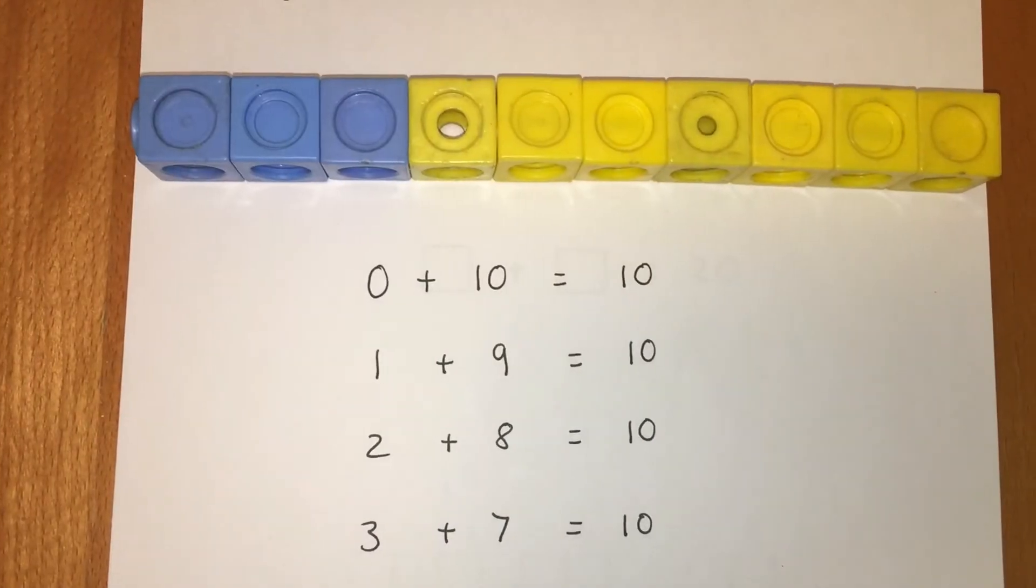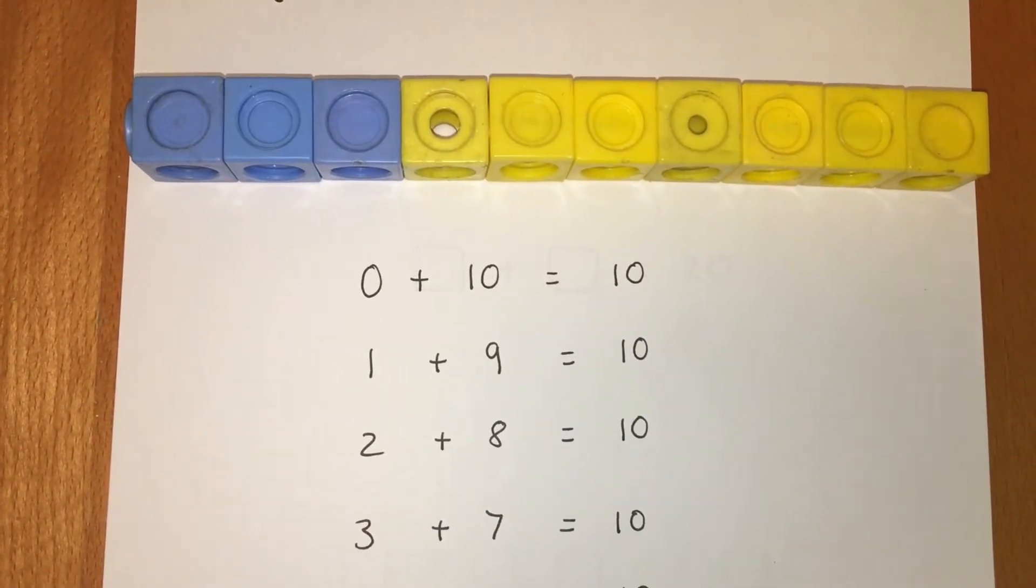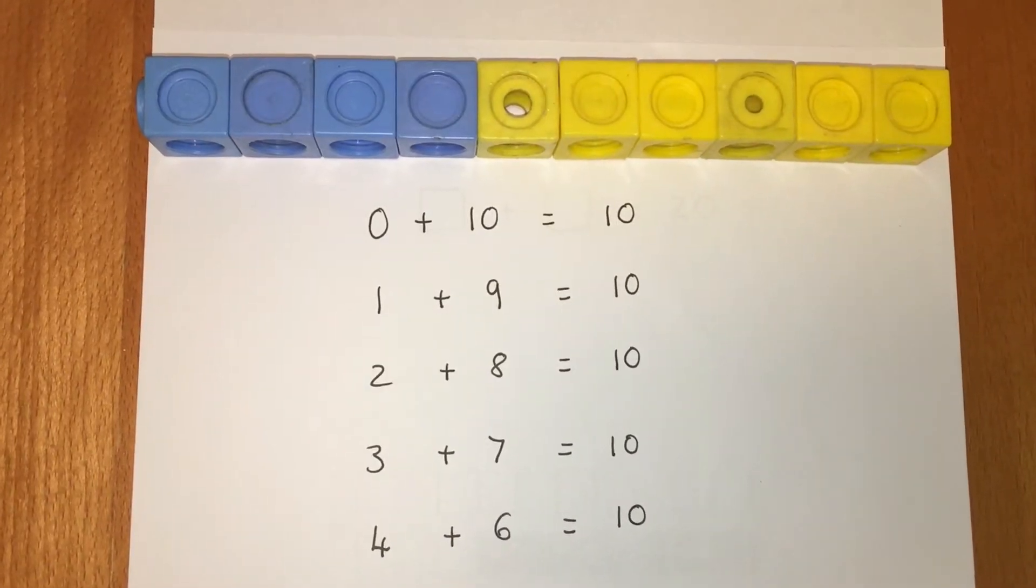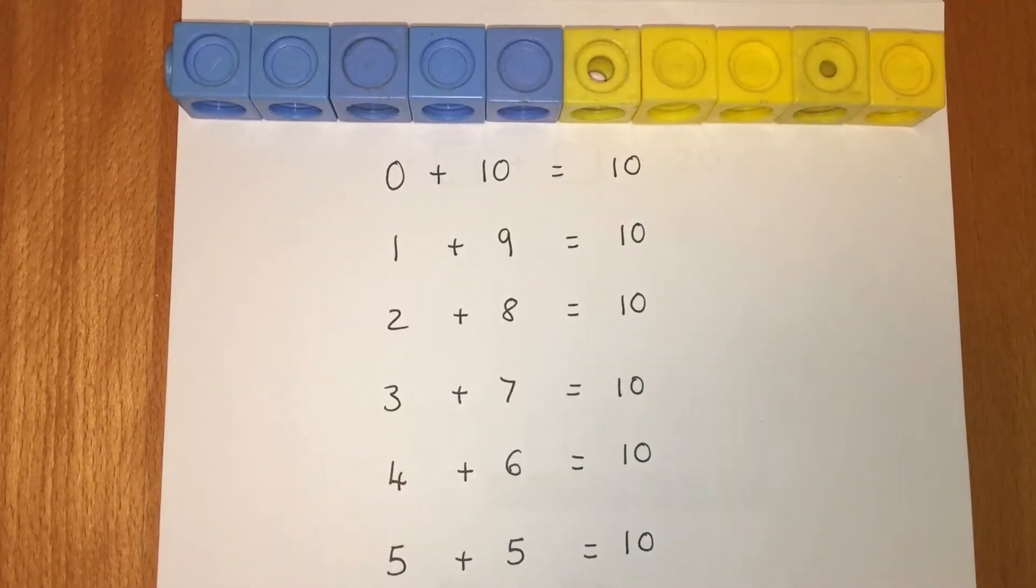Next. 3 plus 7 equals 10. Next. 4 plus 6 equals 10. 5 plus 5 equals 10.